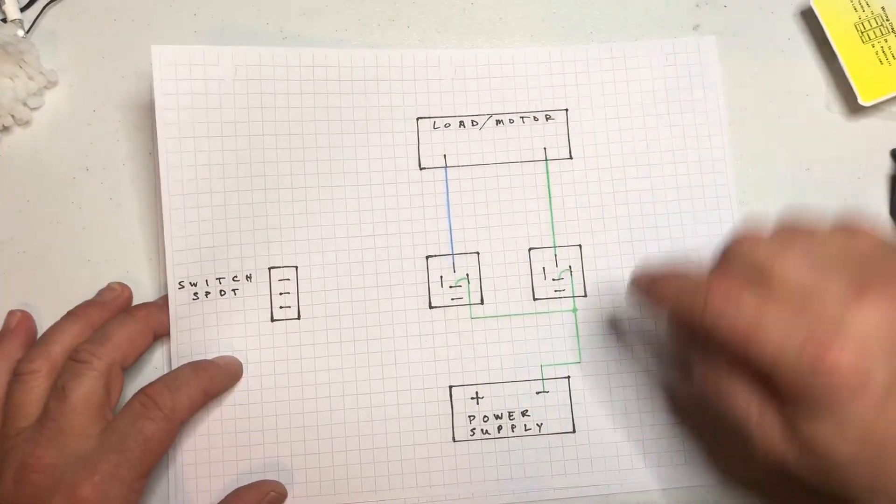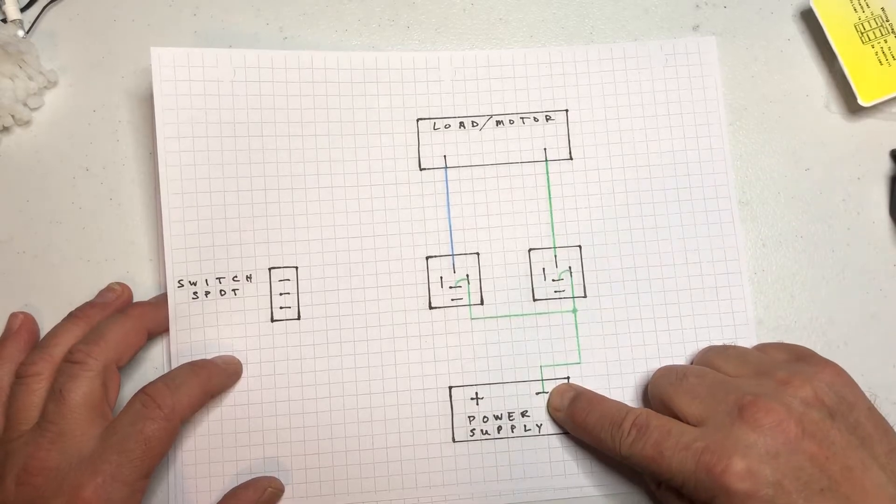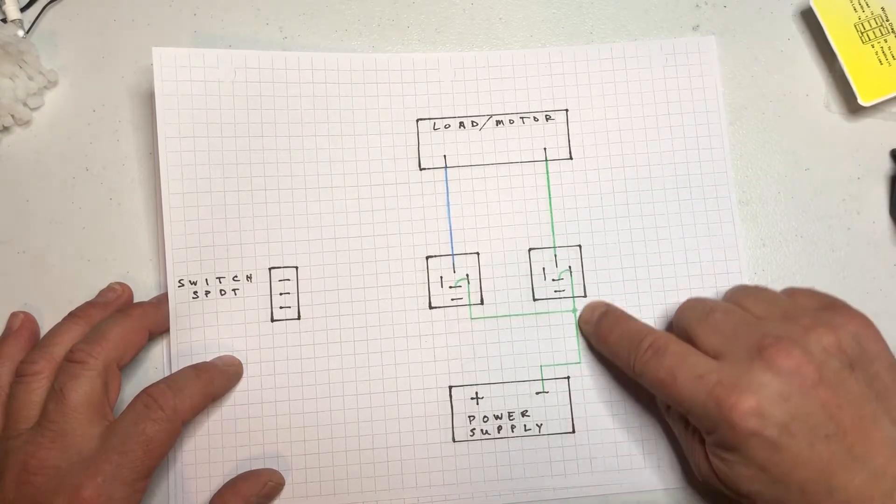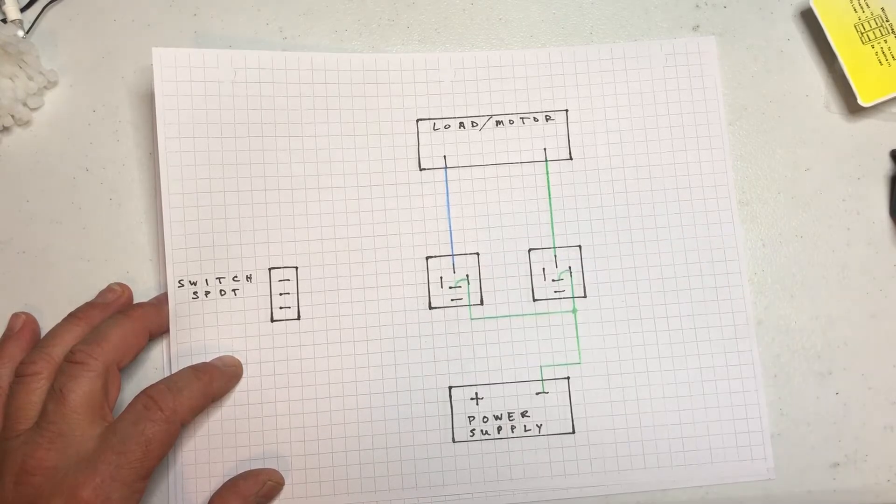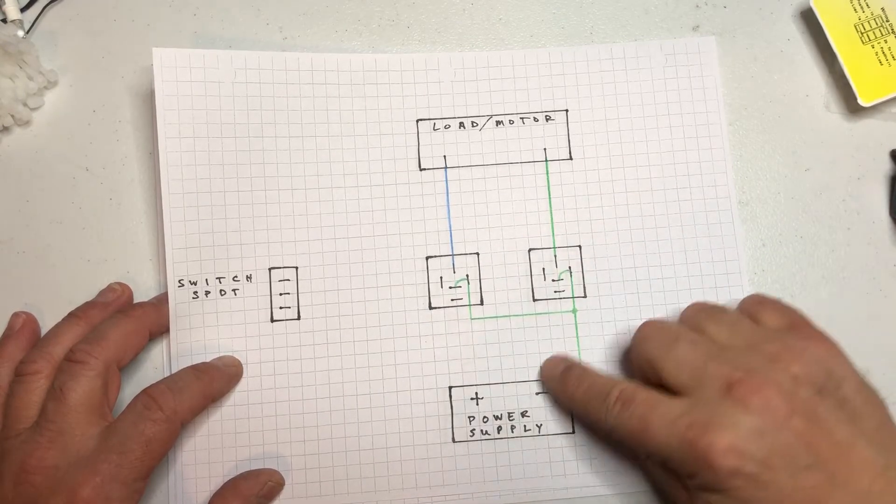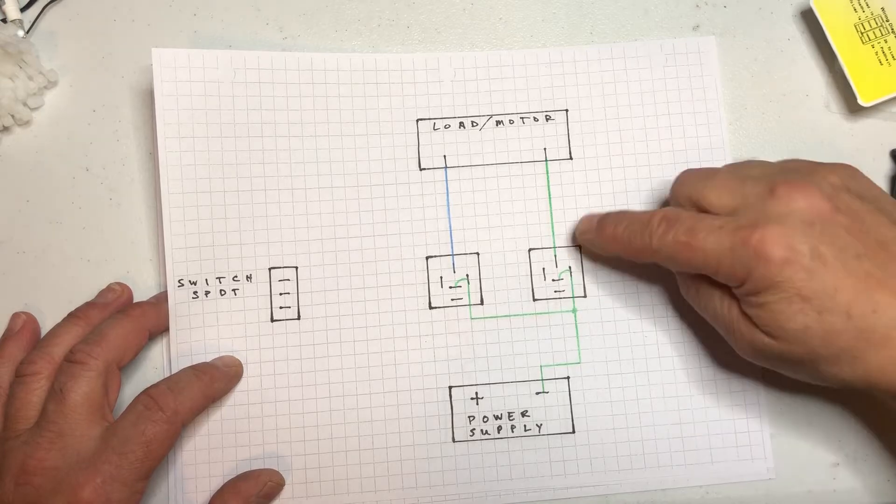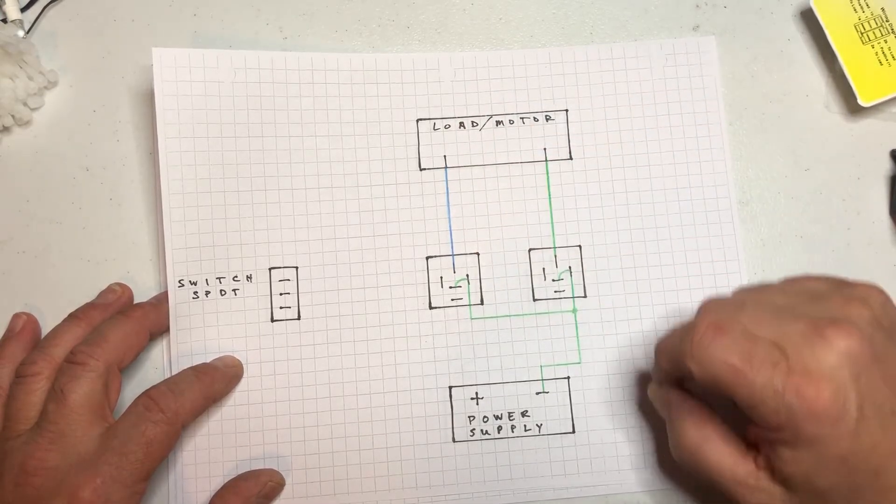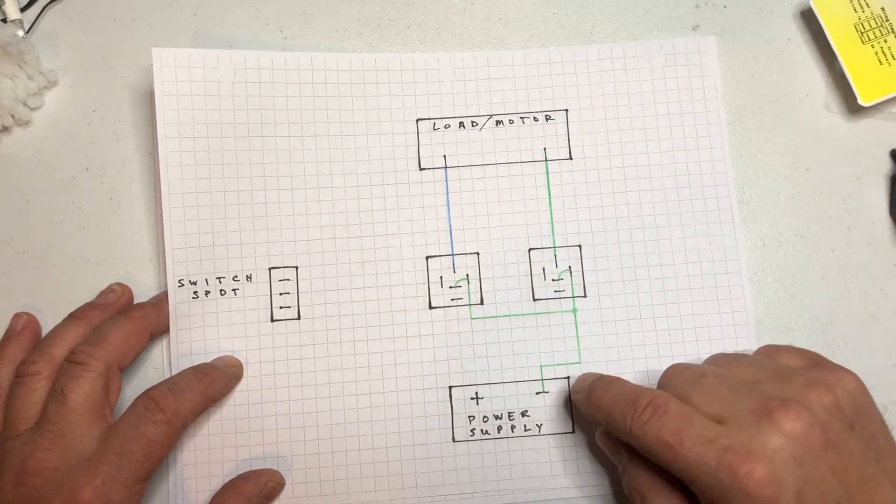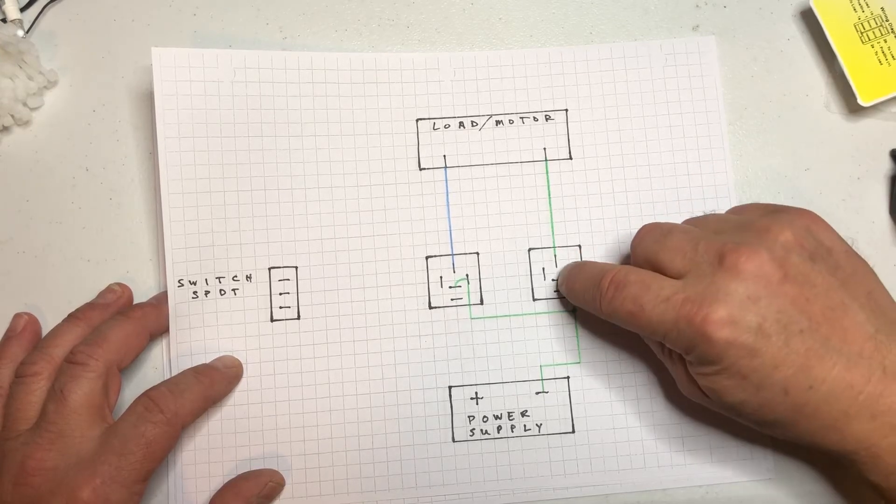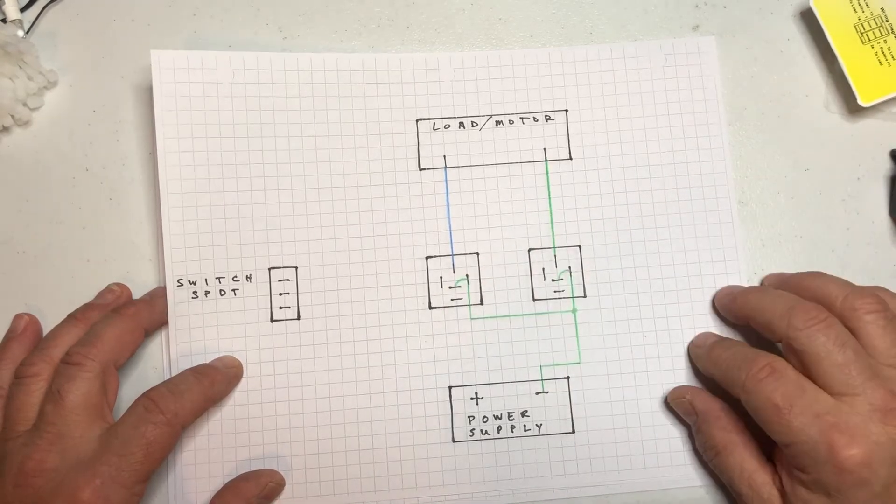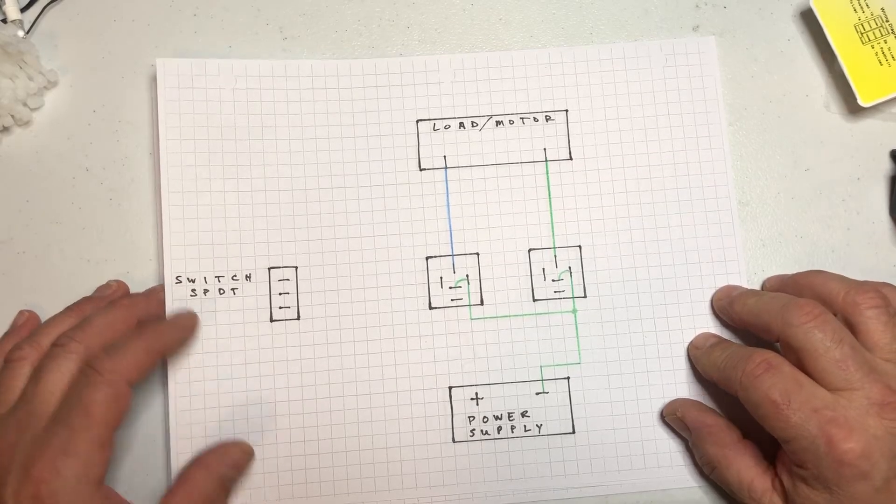This is your negative circuit. So if you see in my other video how you can jump these all across those four terminals as long as you have the right gauge wire to support the load, or you can do them separate. The coil can be a separate circuit from the contacts. Okay so that's the negative.